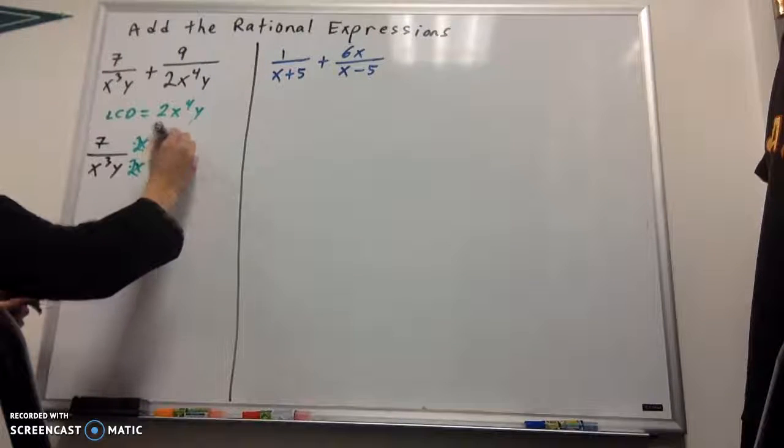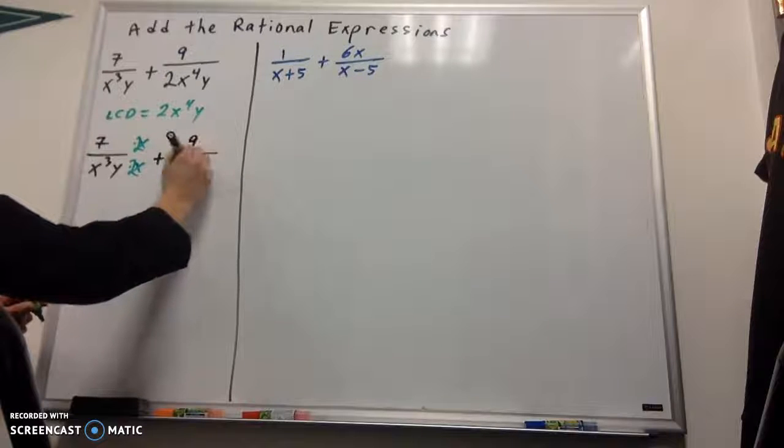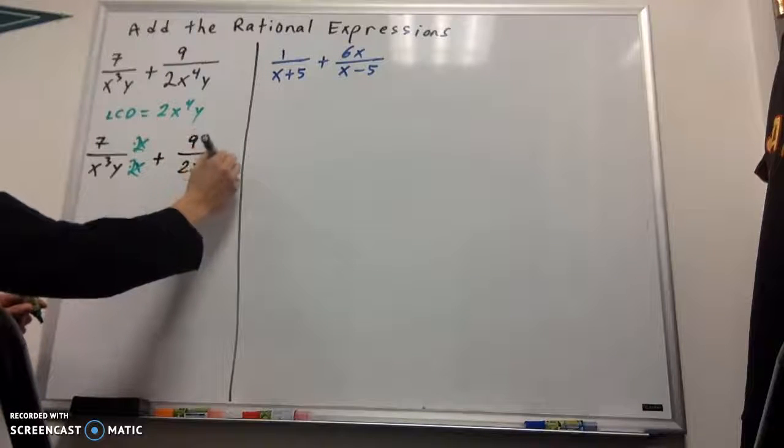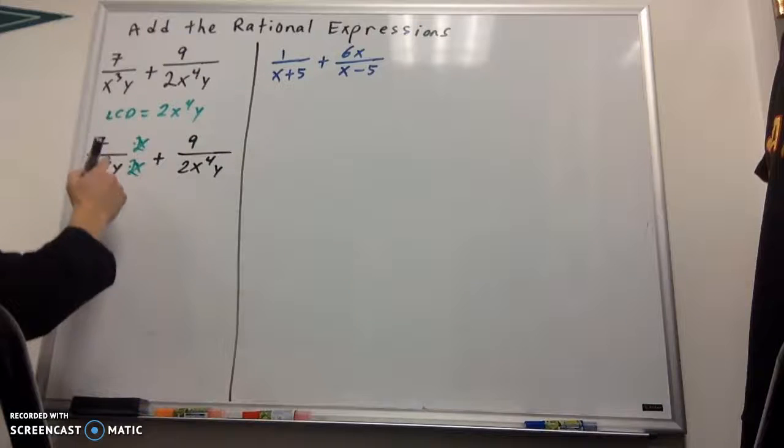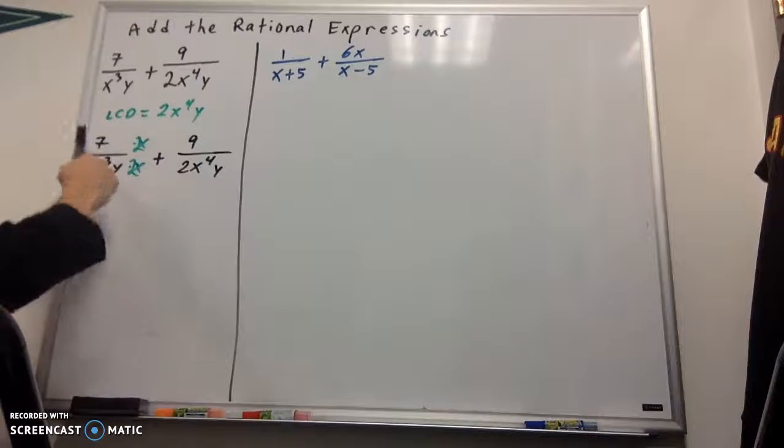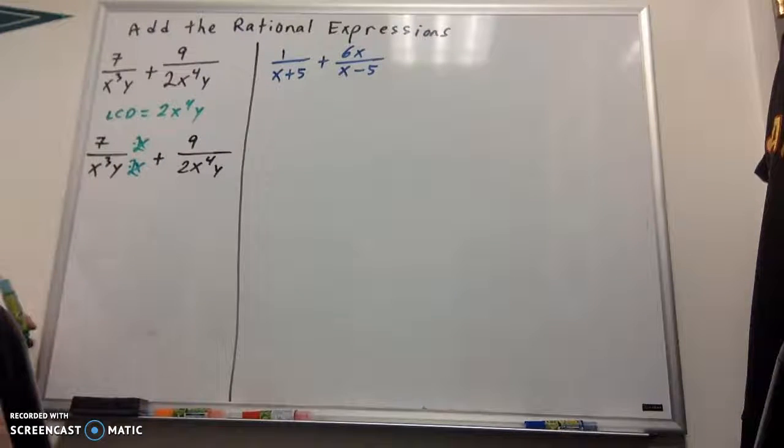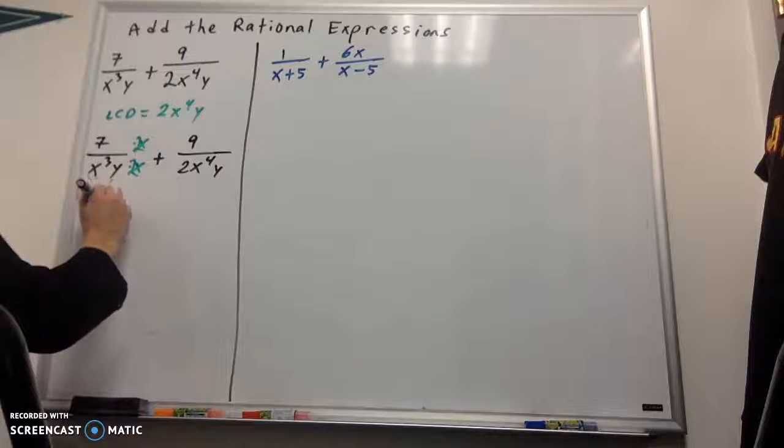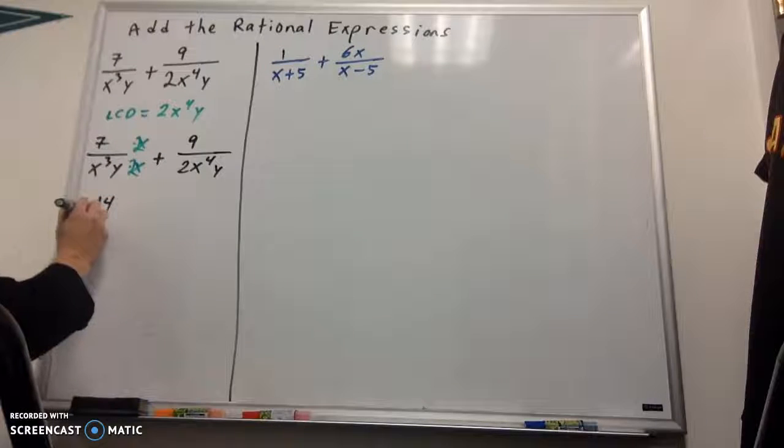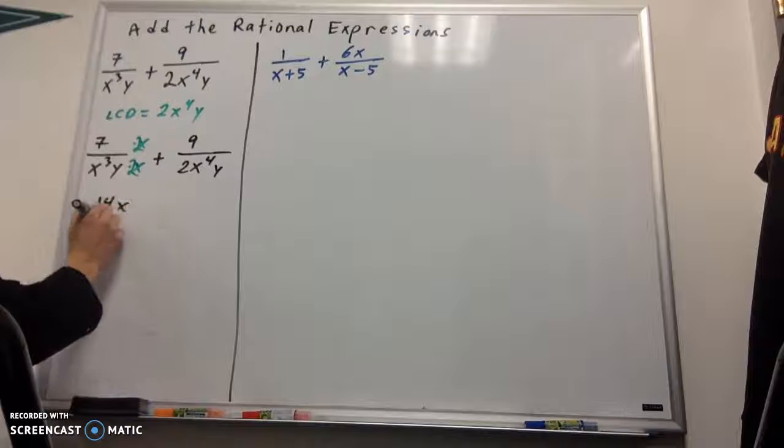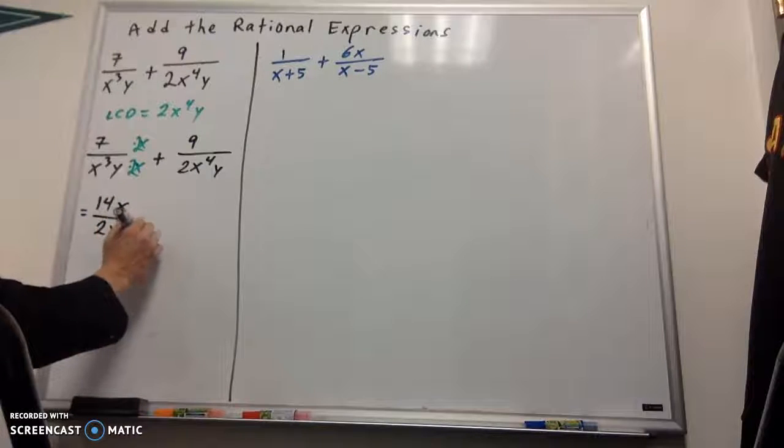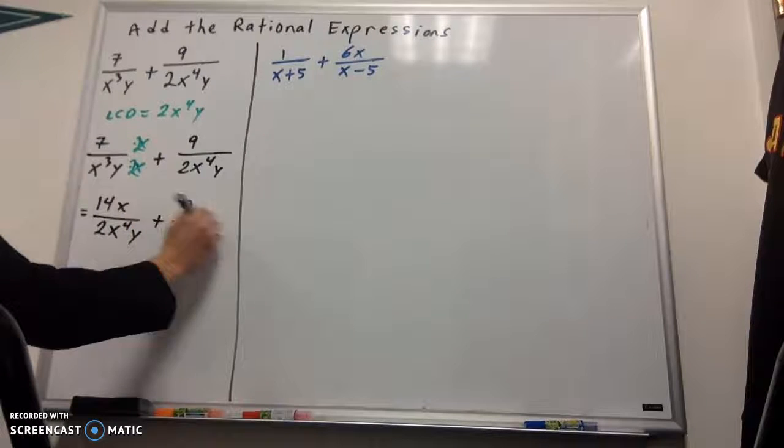Second fraction, what's missing? Nothing. It's all there. So that's kind of nice. So, the first numerator we're going to simplify. 7 times 2x is 14x over my LCD of 2x to the fourth y. Second fraction is just fine as it is.